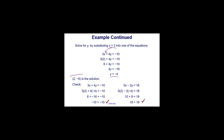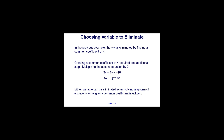Putting them together, we get that (2, negative 4) is the solution. When we check that solution in both equations, we get true statements. In the previous example, the y variable was eliminated by finding a common coefficient of 4. Creating that common coefficient required one additional step — we had to multiply the second equation by 2, since we already had a 4y in the first equation and only needed to create a negative 4y.